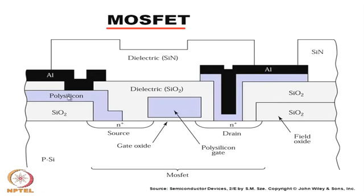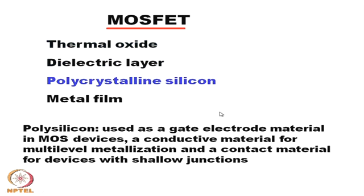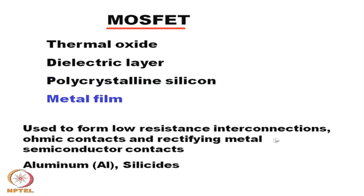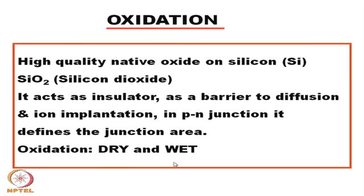Another important layer is the polysilicon layer — this blue region — which is polycrystalline silicon used as a gate electrode material in MOS devices, as a conductive material for multilevel metallization, and as a contact material for devices with shallow junctions. The last layer is the metal film, used to form low-resistance interconnections, ohmic contacts between metal and semiconductor, and rectifying metal-semiconductor barriers. Aluminum and silicides are widely used for making the metal films.